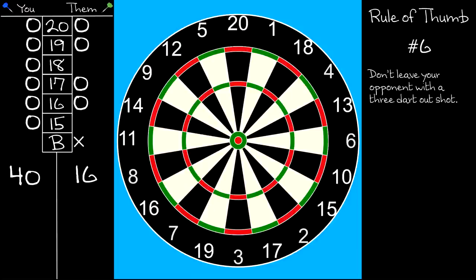Rule of thumb number six is don't leave your opponent a three dart out shot. In this scenario, it's your turn to throw. You're ahead on points and you only need three bulls to win the game. But before you throw at the bull, consider your opponent's position. If you fail to close the game this round, your opponent has a chance to win the game with three darts: a double bull, treble 18, and treble 15. Sure, it's a long shot, but do you want to risk it? You can defend against the three dart out possibility by scoring a single 18. That takes your point lead from 24 to 42 and means that your opponent now needs three bulls, treble 18, and treble 15 to win. And of course, that can't be done with three darts.